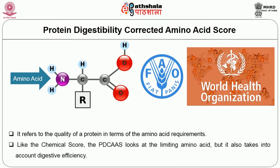The PDCAAS — Protein Digestibility Corrected Amino Acid Score — looks at the limiting amino acid. When you screen a protein you will find around 20 amino acids comprising both essential and non-essential amino acids. PDCAAS also takes into consideration the digestive efficiency, because not all the protein we consume is digested. Considering the digestive efficiency of a particular protein is very important before it can be retained in the body or participate in metabolic activities.